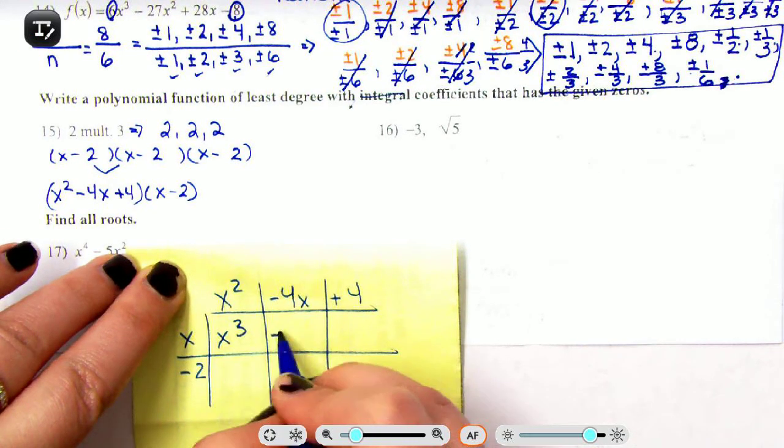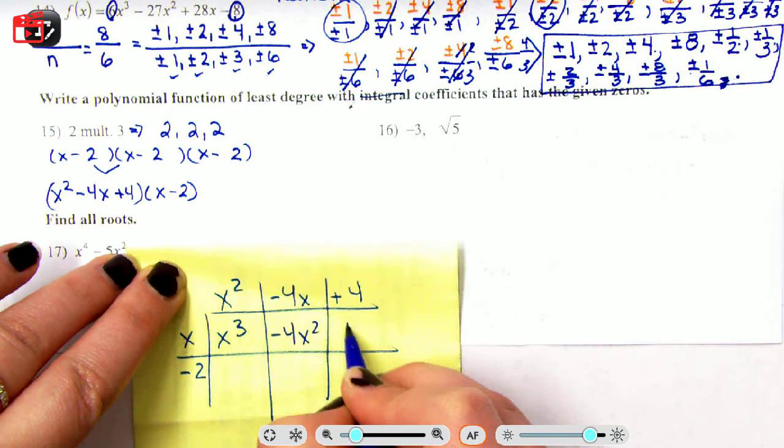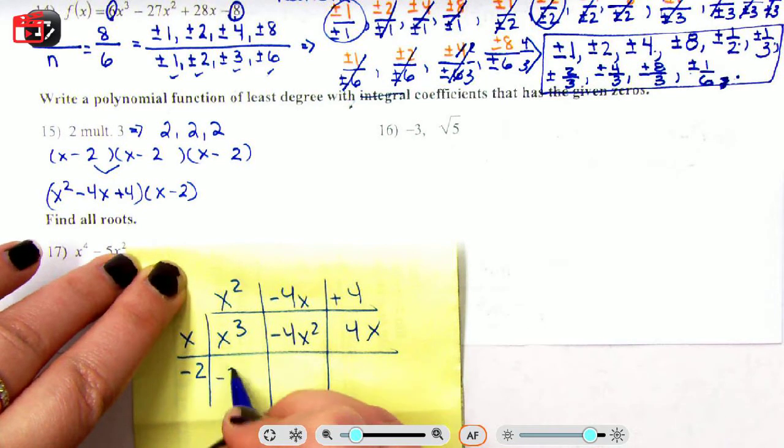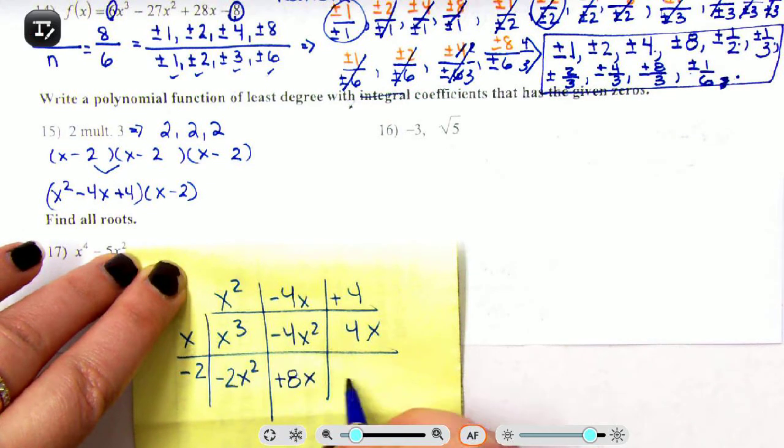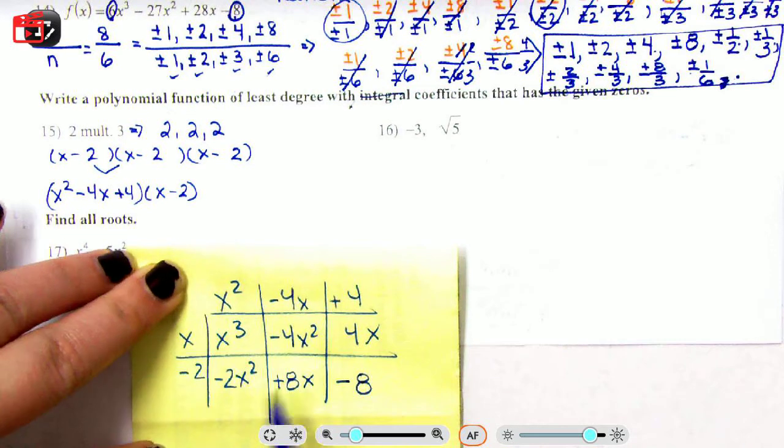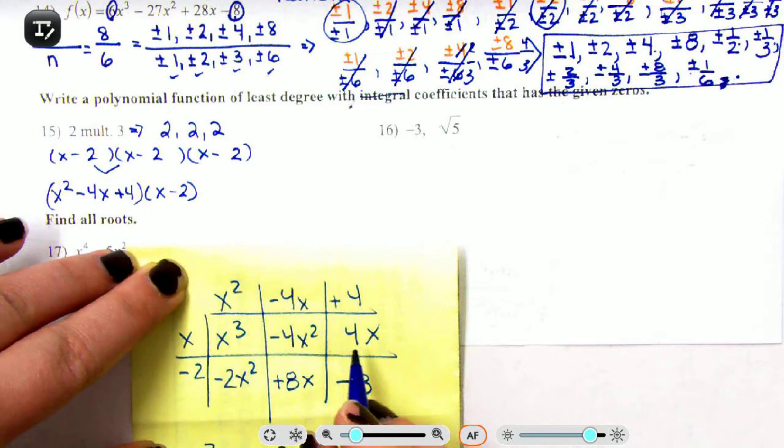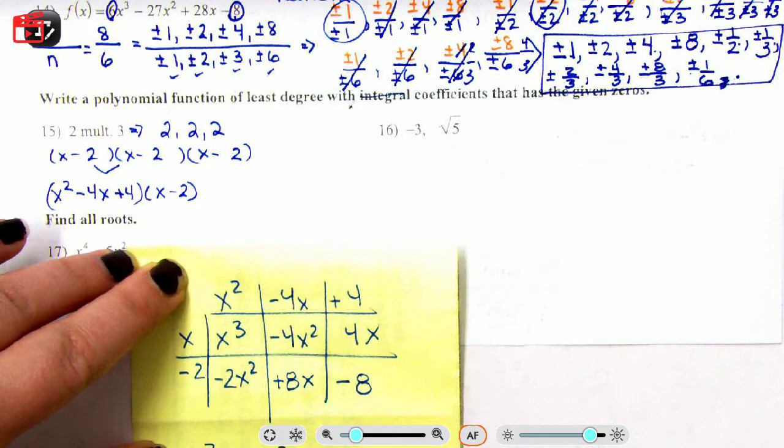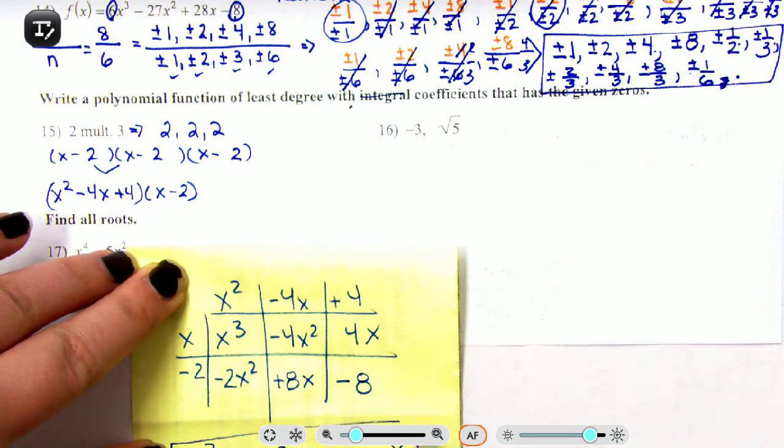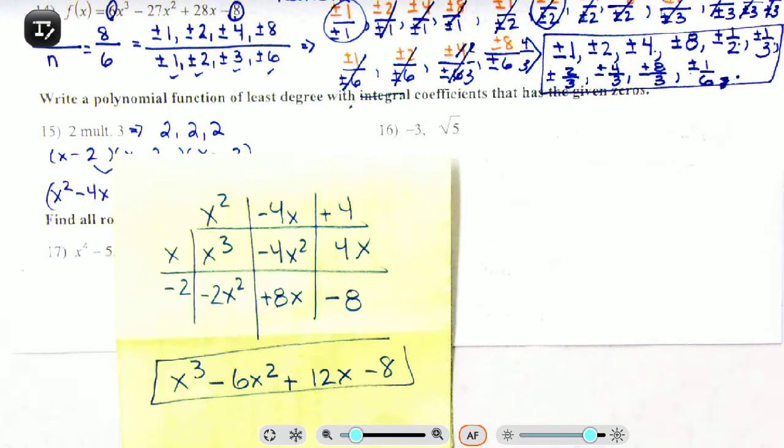So I have x³ - 4x² + 4x - 2x² + 8x - 8. So then let's see, x³ - 6x² + 8, 9, 10, 11, 12x - 8. We should get this as your final answer.